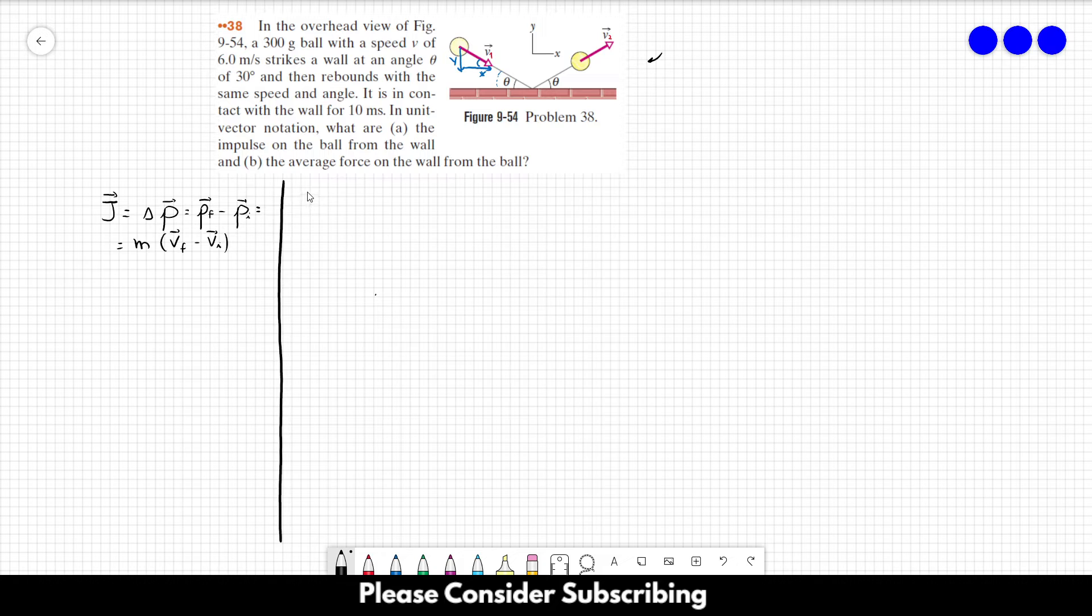v1x is equal to the magnitude of v1 times the cosine of the angle, and v1y is equal to the magnitude of the velocity times the sine of the angle. But in this case, you can see that the x component is positive and the y component is negative, so we have to apply a minus sign here.